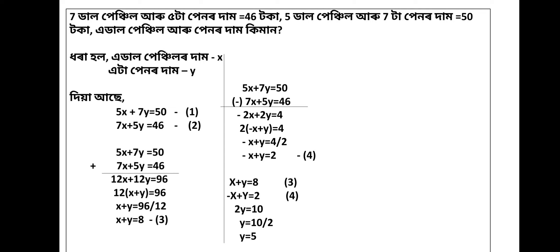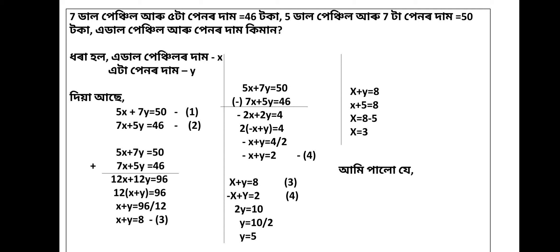So what do we have to do? We have equations 3 and 4. x plus y is equal to 8. We have y equals 5, so we use y to find x: x is equal to 8 minus 5. So x equals 3, and y equals 5. We add this pencil as x equals 3 and y equals 5. I will be able to answer the questions.